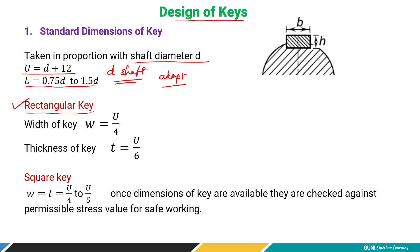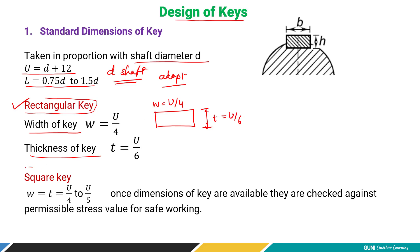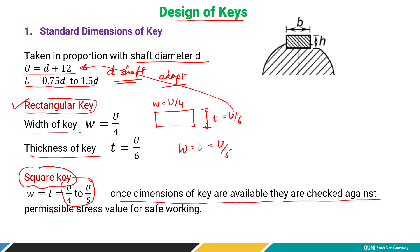For a rectangle key, the width is w = u/4 and the thickness is t = u/6. For a square key, both width and thickness are taken as u/5 — the range is u/4 to u/5. The u dimension is calculated from the proportion u = diameter + 12 mm. Once key dimensions are available, they are checked against the permissible safe working stress.